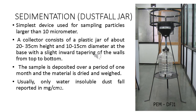The first method of collection of particulate matter is sedimentation, also known as the dust hole jar — it is the simplest device. We can see the figure on the right side of the slide. This method is used for sampling particles with size greater than 10 micrometers. A collector consists of a plastic jar of about 20–35 cm height and 10–15 cm diameter at the base, with a slight inward tapering from top to bottom.